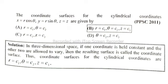In three-dimensional space, if one coordinate is held constant and the other two are allowed to vary, then the resulting surface is called the coordinate surface. Thus, coordinate surfaces for the cylindrical coordinates